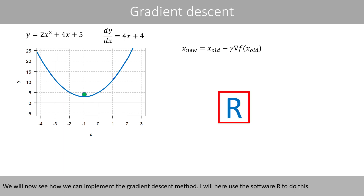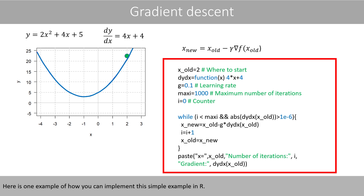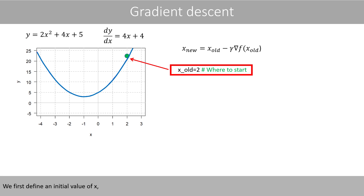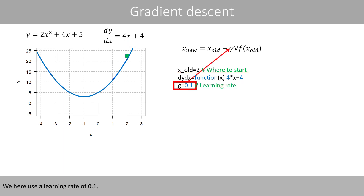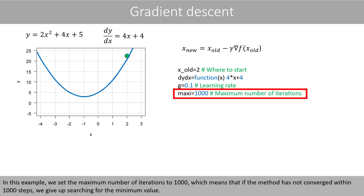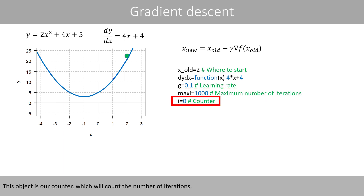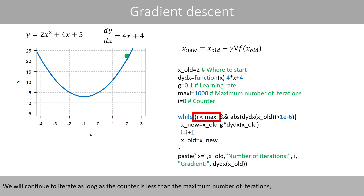We will now see how we can implement the gradient descent method. I will here use the software R to do this. Here is one example of how you can implement this simple example in R. We first define the initial value of x. Then we create a function which computes the derivative at a certain point. We here use a learning rate of 0.1. In this example, we set the maximum number of iterations to 1000, which means that if the method has not converged within 1000 steps, we give up searching for the minimum value. This object is our counter, which will count the number of iterations.